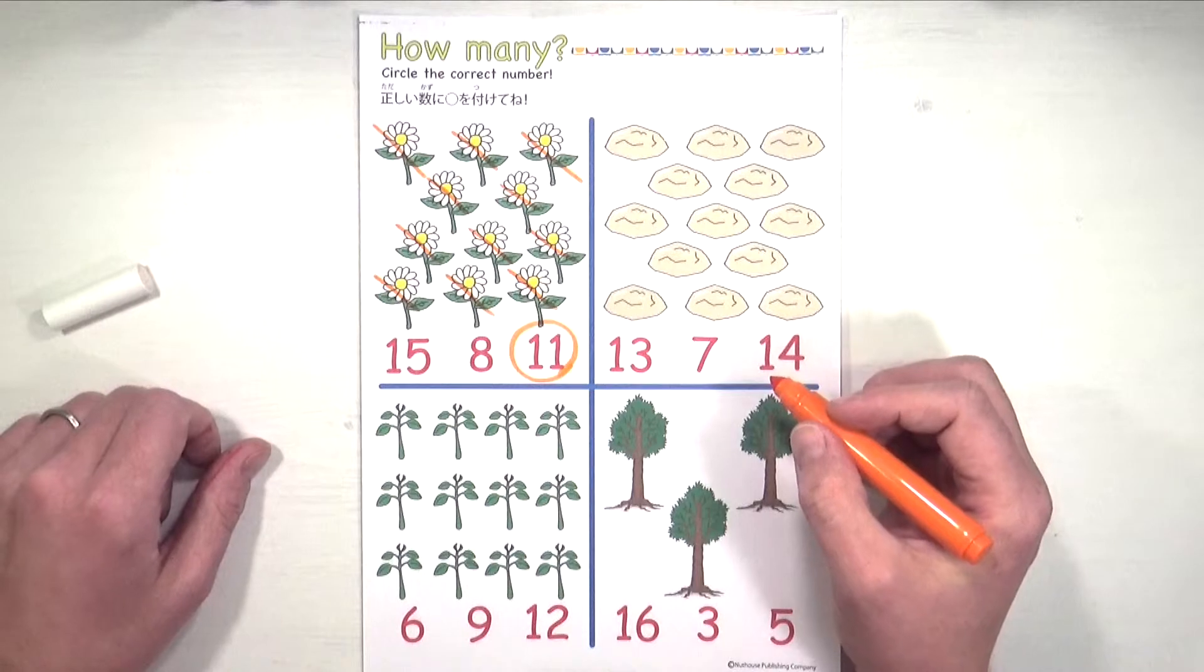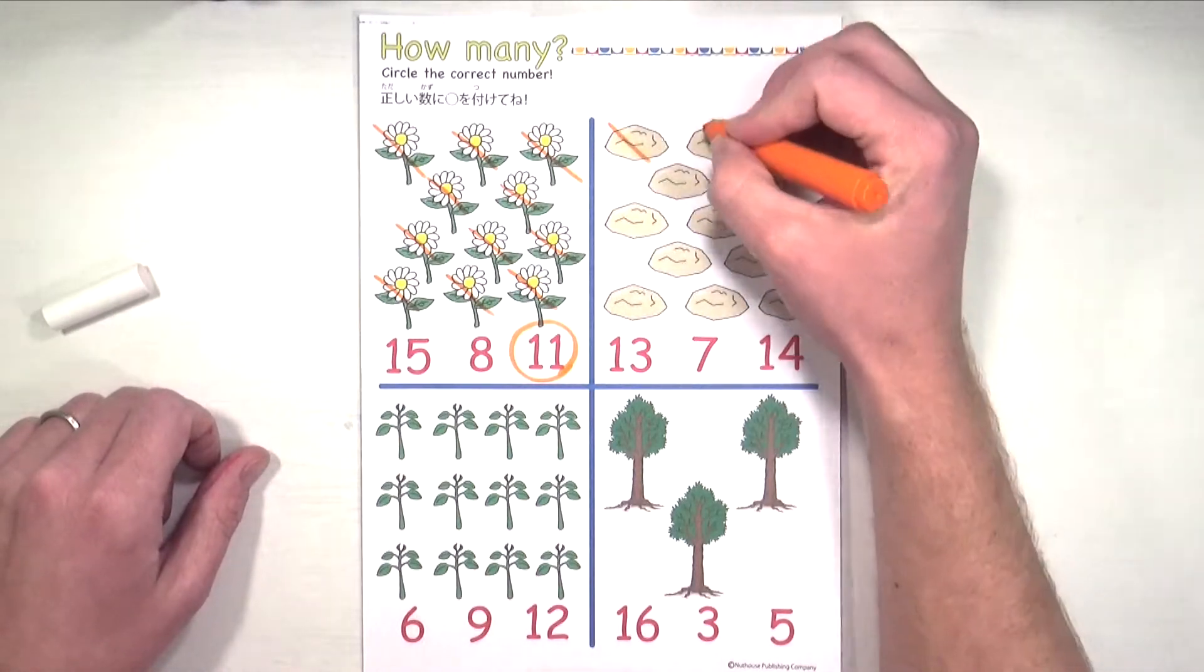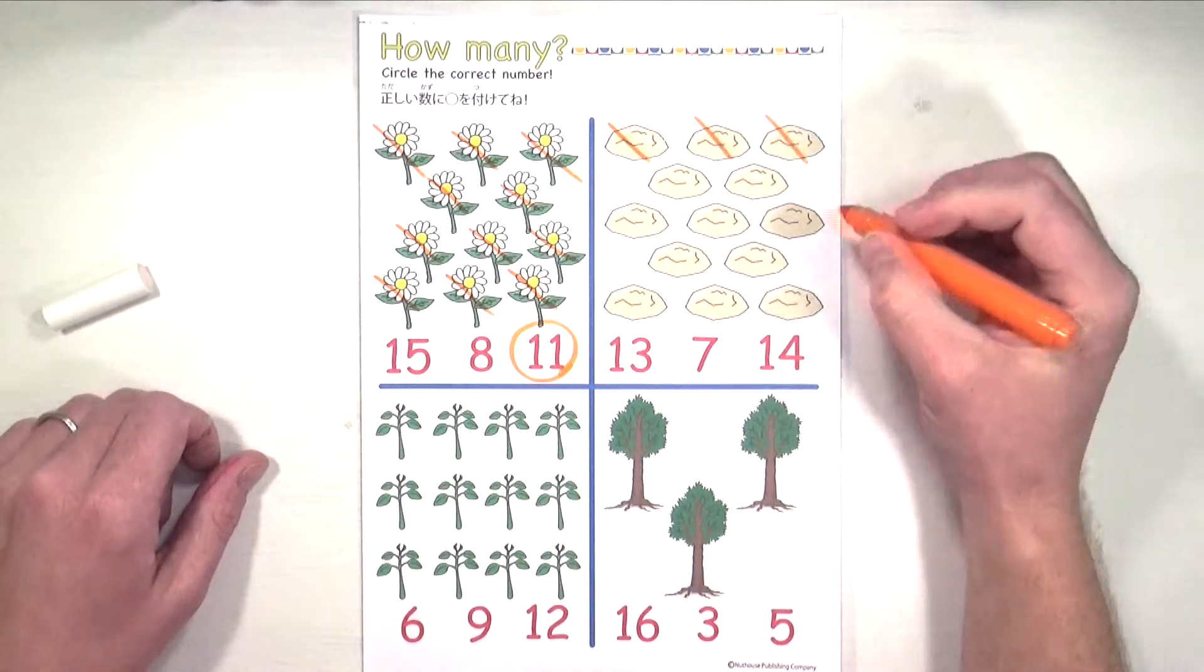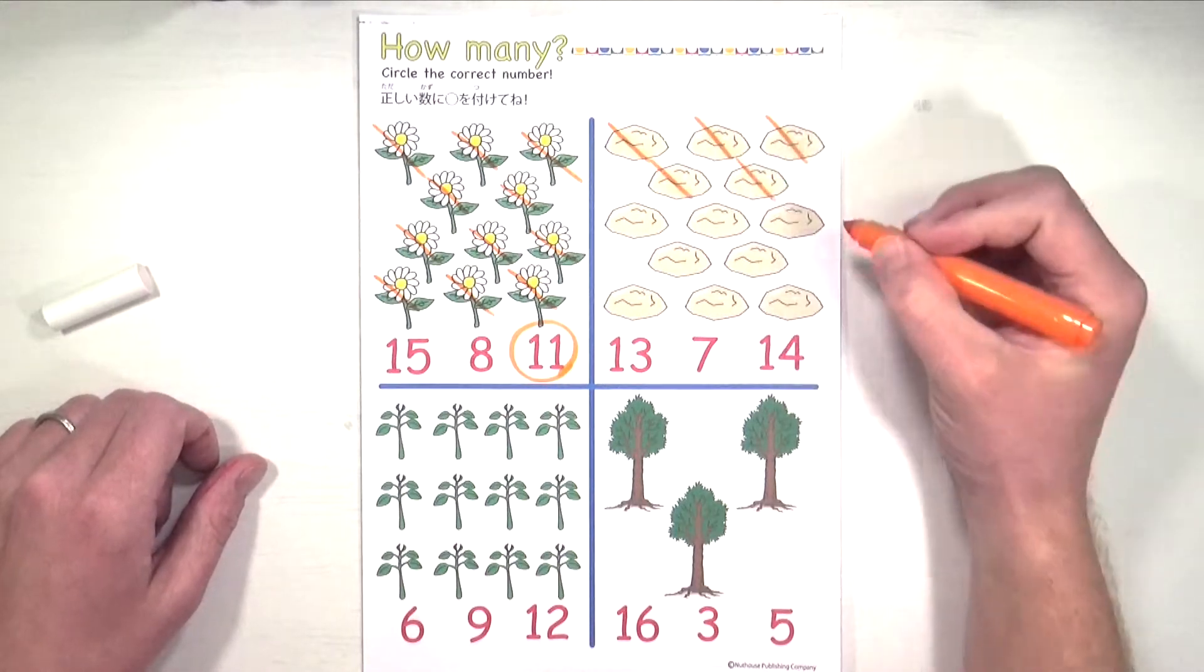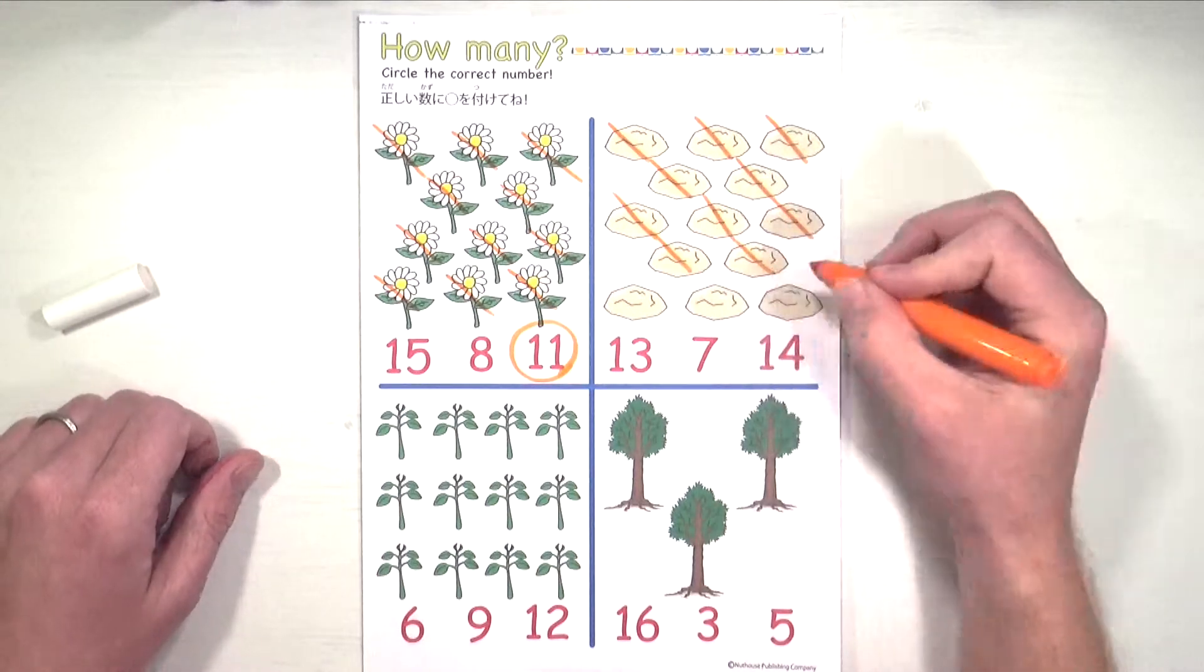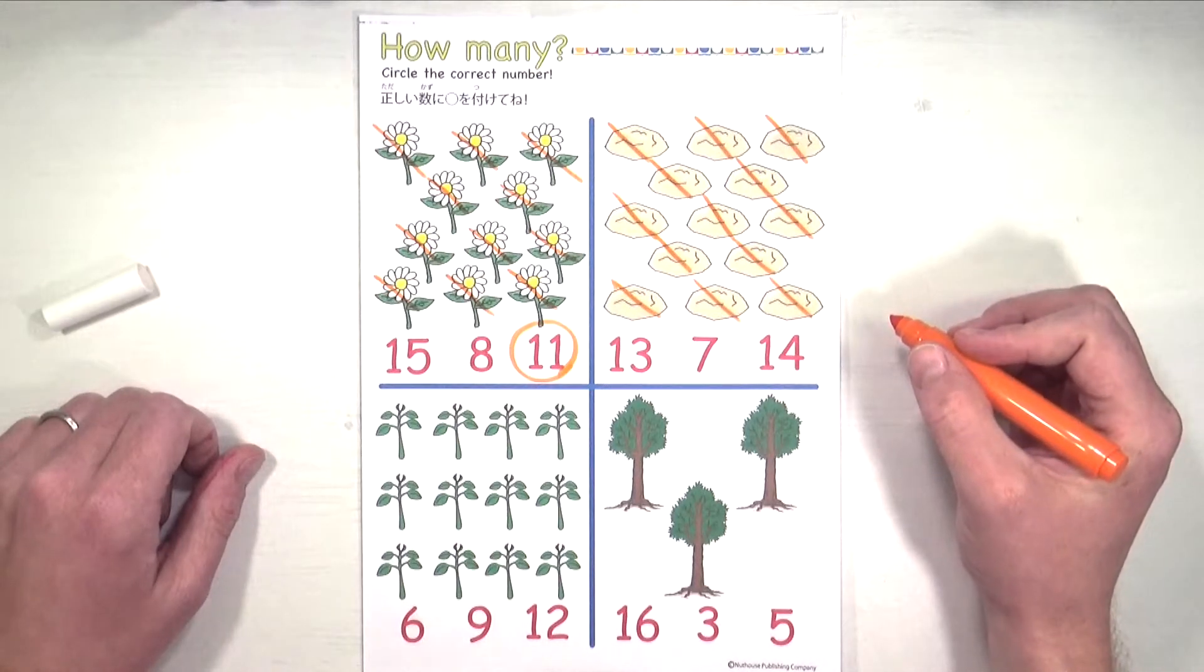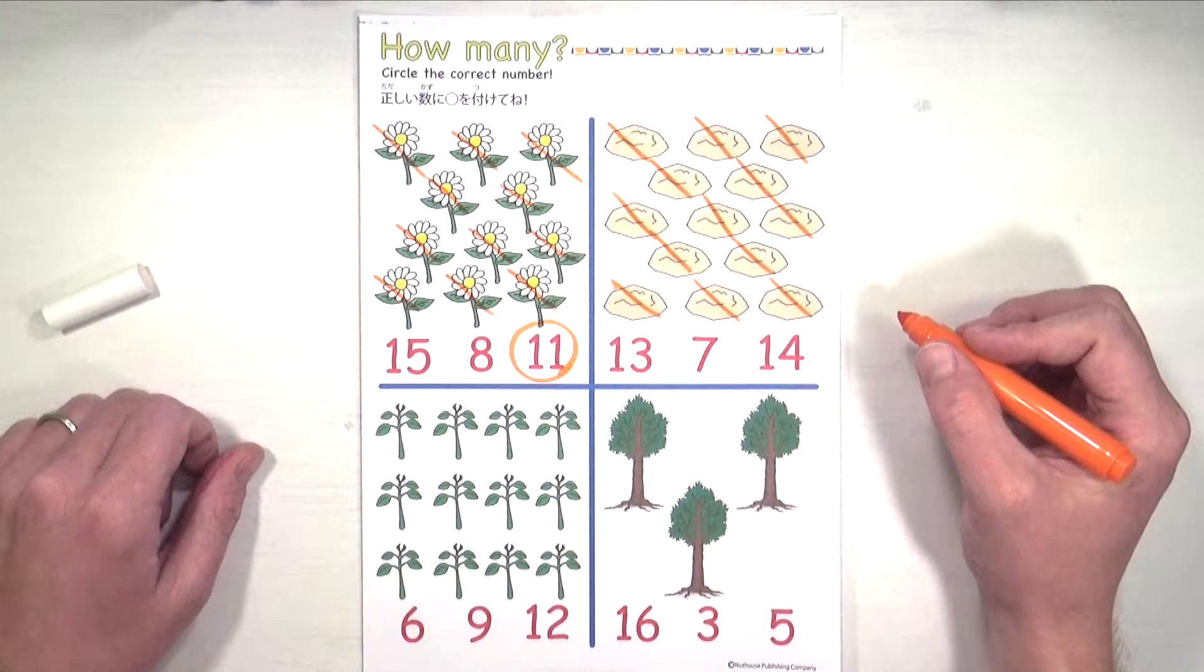Shall we do the same for the rocks? Let's cross and count. Here we go. One, two, three, four, five, six, seven, eight, nine, ten, eleven, twelve, thirteen. Thirteen rocks.